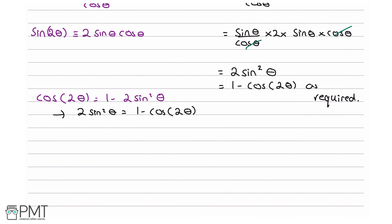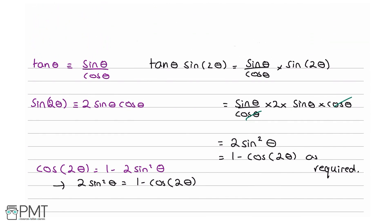This question is worth three marks. Your first mark comes from using tanθ ≡ sinθ/cosθ and sin2θ ≡ 2sinθcosθ to reach the simplified line. Your second and third marks come from simplifying the cosθ's to get 2 sin²θ, then using cos2θ = 1 minus 2 sin²θ and rearranging to complete the proof as required.